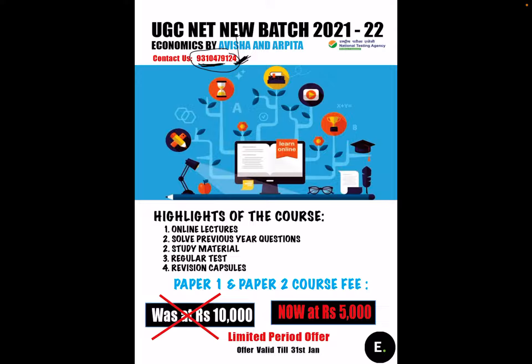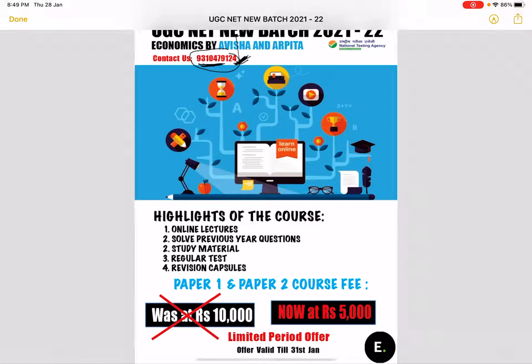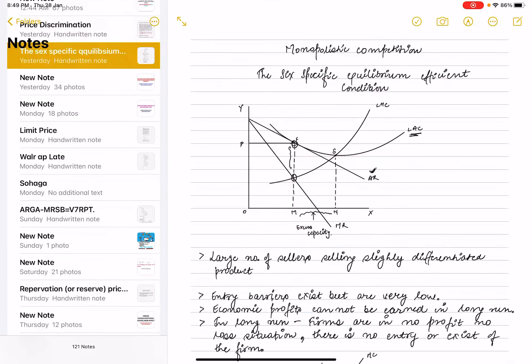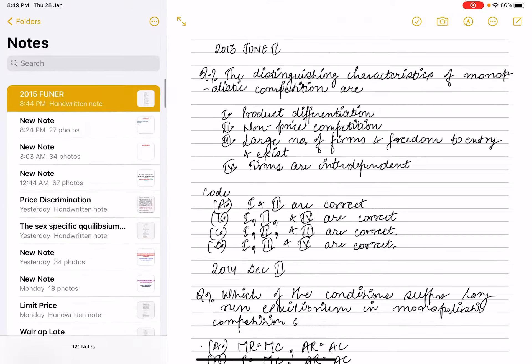The course fee was ten thousand but now it's available at five thousand, which is a fifty percent discount. But this is a limited period offer only available till 31st January. If you want to enroll you can contact me on my WhatsApp number which is mentioned here: 9310479124. Now let's see the monopolistic competition previous year questions.